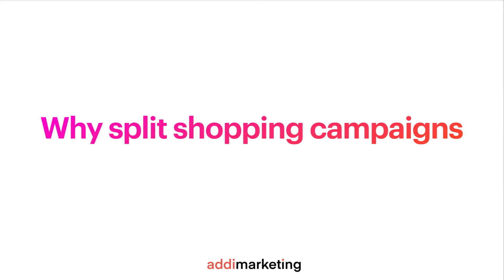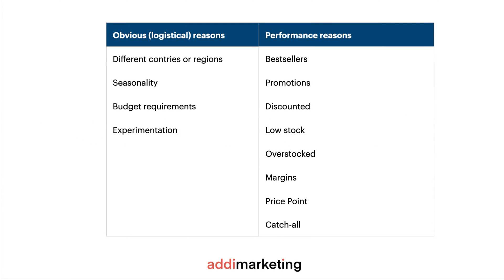Let's look at the reasons to split shopping campaigns. There are usually two types of reasons. The first is obvious or logistical reasons. For example, if you sell in different countries, you have to run separate campaigns. Also for convenience — if you sell winter wear and summer swimwear, it's convenient to have them in two separate campaigns and turn them on or off per campaign. If you have specific budget requirements per product or product category, you control it by putting them in separate campaigns. And of course, when you experiment — which you always should be doing to improve performance — you also do that in separate campaigns in many cases.